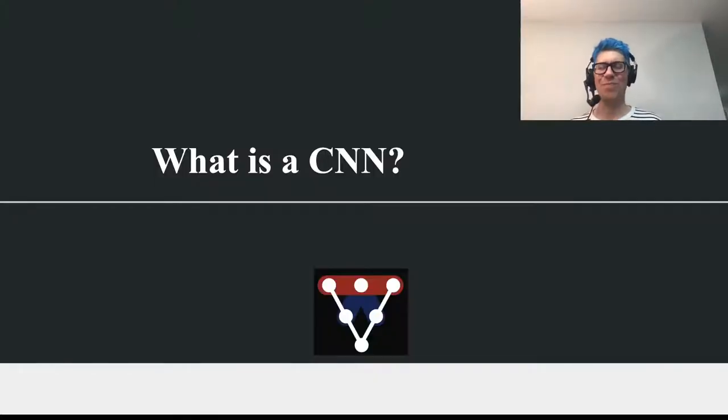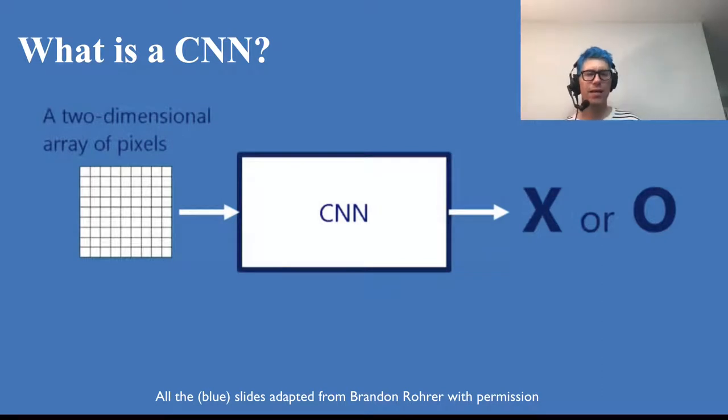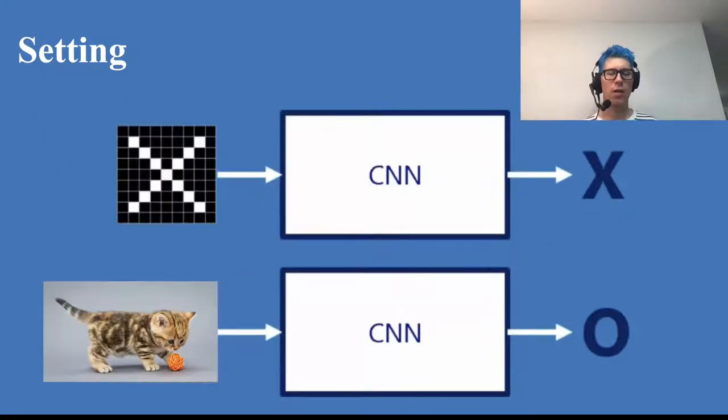So what is a convolutional net? I want to say here that I will be using the way that Brandon Rohrer is using this description, and he was so nice to give me permission to use his slides for that. What we have is a regular supervised learning setting. We have a two-dimensional array of pixels that goes into the convnet, and the output is, oh, this is an X, or a classification on the output.